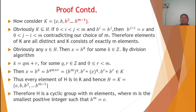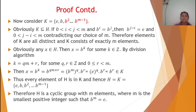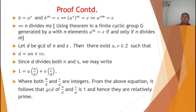Therefore H is a cyclic group of m elements, where m is the smallest positive integer such that b raised to m equals e. Now since b equals a raised to s, b raised to m equals e implies a raised to sm equals e.